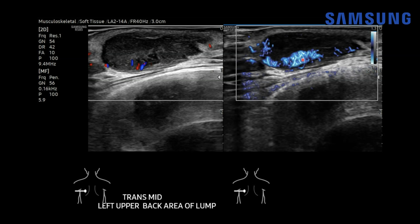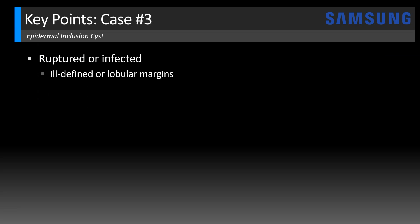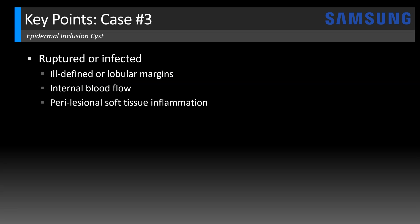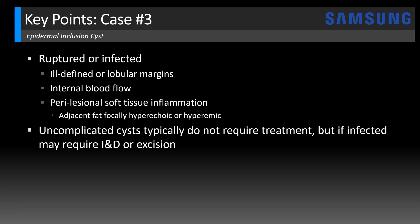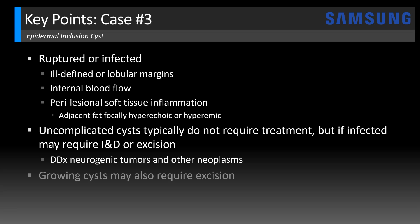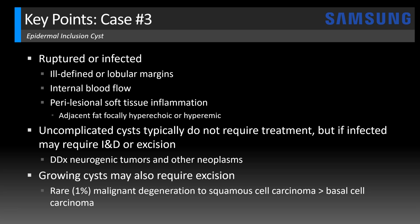These are not findings seen with a non-complicated epidermal inclusion cyst. This raises suspicion for cyst rupture or superinfection, concordant with the surgical findings. For ruptured or infected epidermal inclusion cysts, the ultrasound appearance typically shows ill-defined or lobular margins with internal blood flow and perilesional soft tissue inflammation — appearing as adjacent focal fat hyperechogenicity or hyperemia. Uncomplicated cysts, being benign, typically don't require treatment, but if infected they may require incision and drainage or excision. Anytime a cystic mass has internal blood flow, consider whether it could be a neoplasm such as a neurogenic tumor. Growing cysts may also require excision due to patient discomfort, and there is a rare 1% risk of malignant degeneration — most commonly into squamous cell carcinoma, but also basal cell carcinoma.